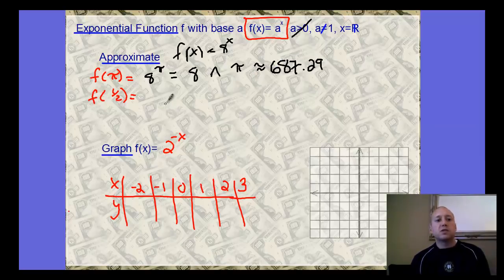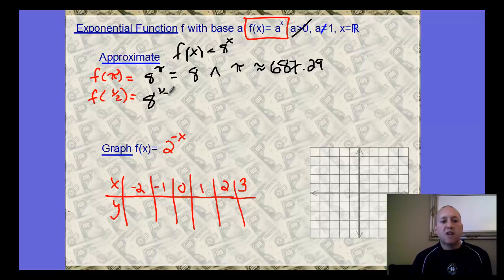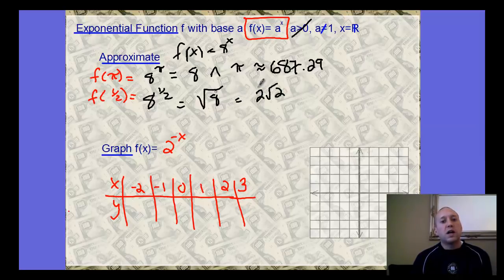It's approximated to the nearest hundredth. For 8 to the one-half power, we should be able to manipulate this. This is really meaning the square root of 8 to the first power, which is the same thing as 2 root 2. You should be able to manipulate that, so you don't have to plug this in the calculator.